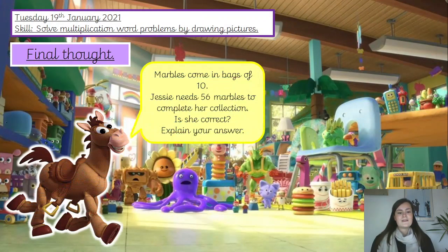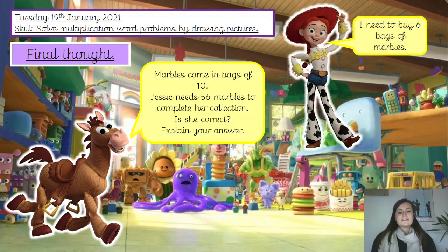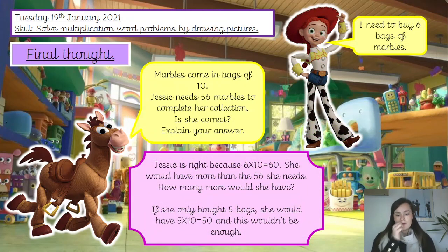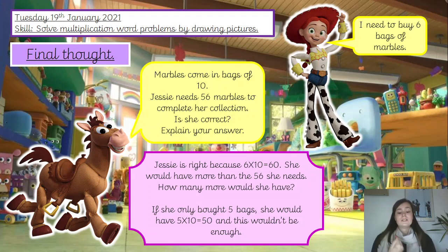Our final thought for today: Marbles come in a bag of 10. Jessie needs 56 marbles to complete her collection. She buys 6 bags. Is she correct? Explain your answer. Jessie is correct because 6 times 10 is 60, and so she would have more than the 56 she needs — 4 more marbles spare, but she'd still have her 56. If she only bought 5 bags, it would be 5 times 10 which is 50, and that wouldn't be enough — she'd still need 6 more. So yes, Jessie is correct in buying 6 bags of marbles. Well done today, everyone. I'll see you later for English. Have a lovely day. Bye!